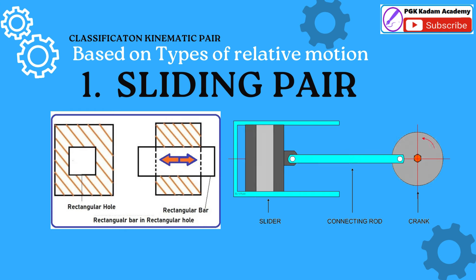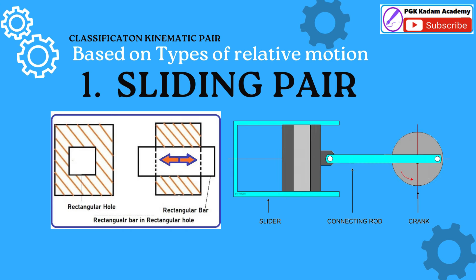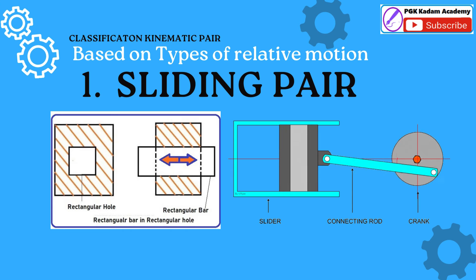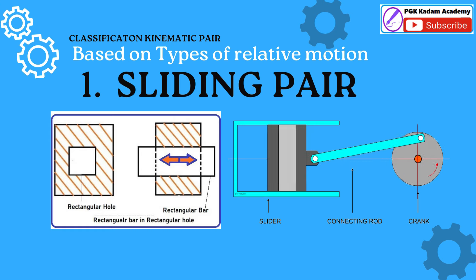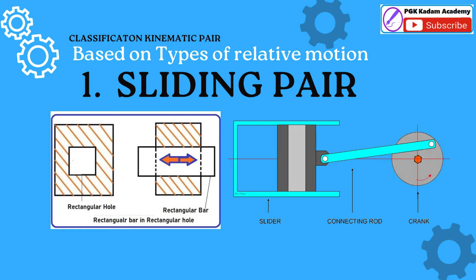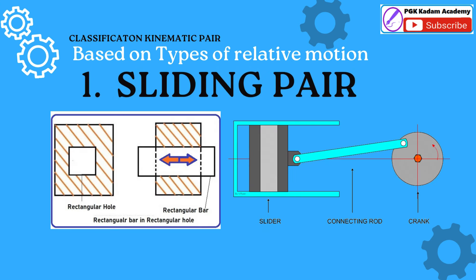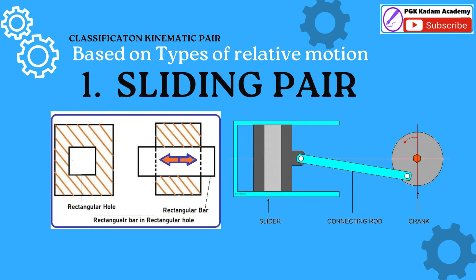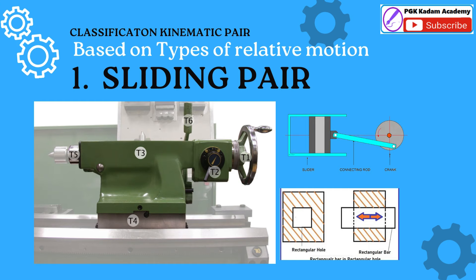First, the Sliding Pair. The type of relative motion between pair links in this type is linear sliding motion. A Sliding Pair is a type of kinematic pair where the driver and the follower have surfaces that slide against each other, allowing linear motion along a specific direction. Examples include a rectangular bar sliding in a rectangular hole, a slider or piston in a slider-crank mechanism, or a piston and cylinder of an IC engine, and a tailstock and lathe bed.